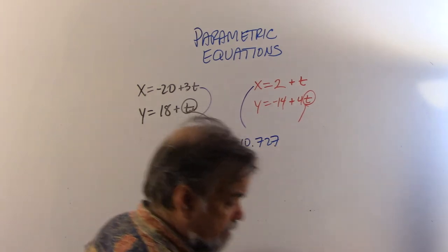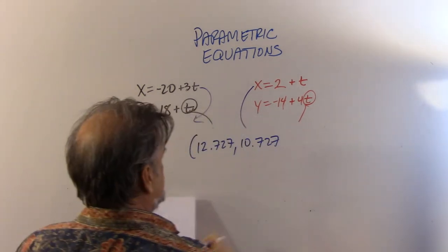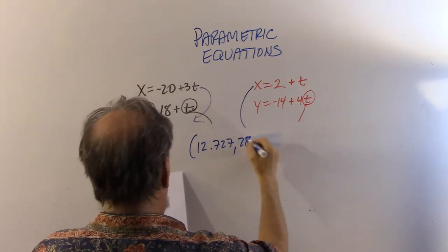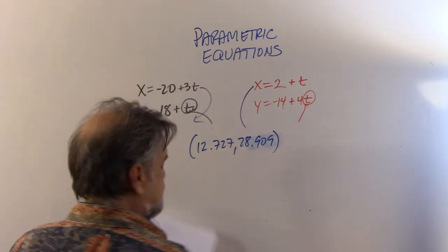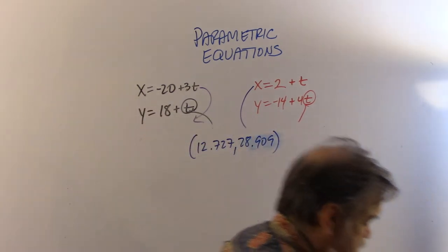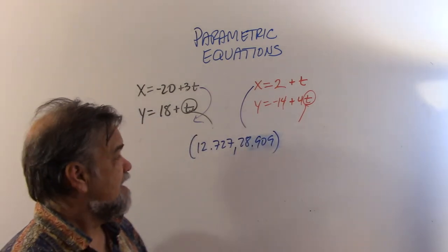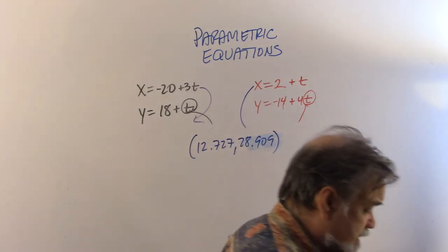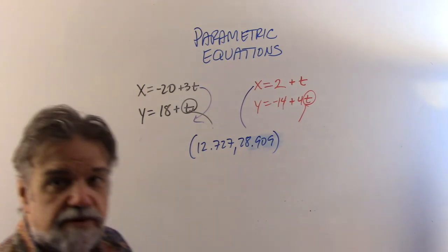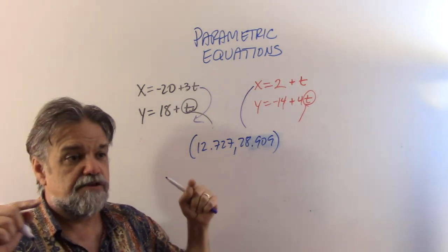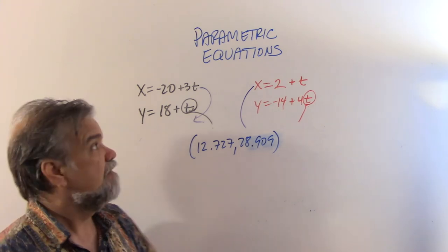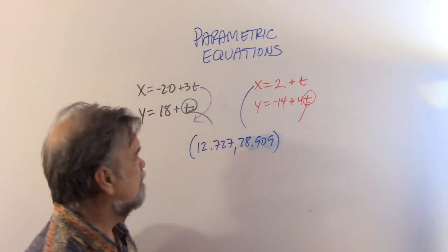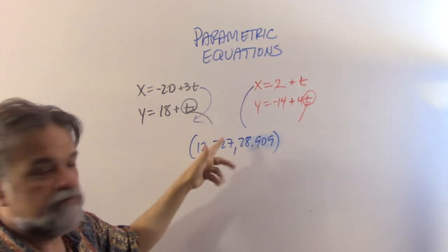After correcting the y-value, the intersection point is (12.727, 28.909). Now the real question: do the ants actually collide? That requires them to arrive at that point at the same time — t must be the same value in both sets of parametric equations.